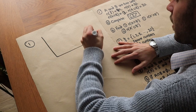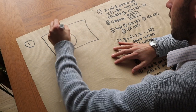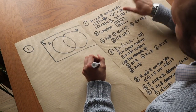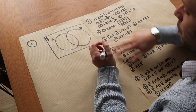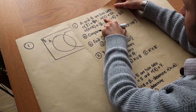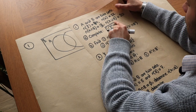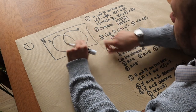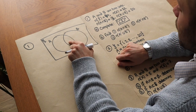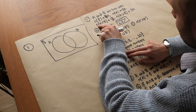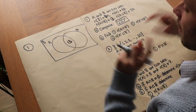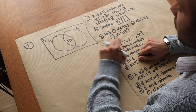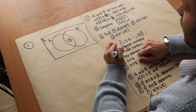Let's use that theory to work out some questions. A and B are two sets, so let's draw a Venn diagram with two overlapping circles, A and B, plus the universal set box. It says N(ξ) = 47, so there are 47 things in the whole box. N(A) = 22, N(A ∩ B) = 13, and N(A ∪ B) = 30. This is a frequency Venn diagram because the numbers we put in each region represent the count of things in that region, not the values themselves.